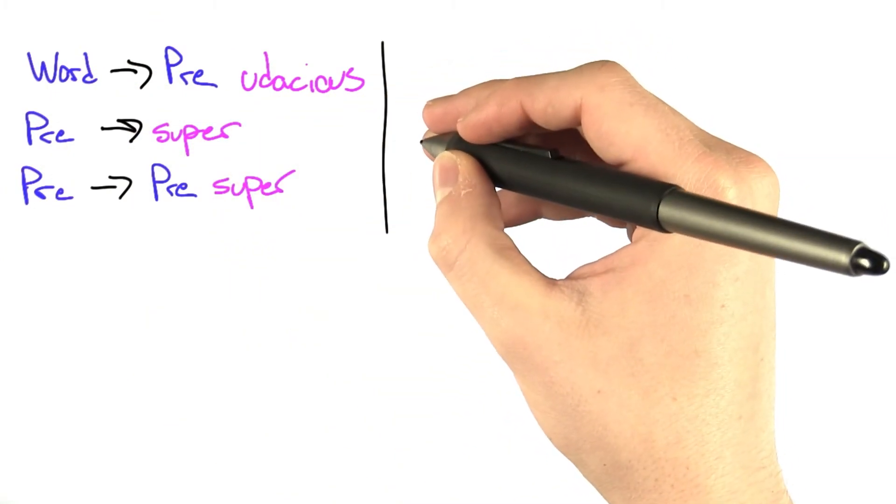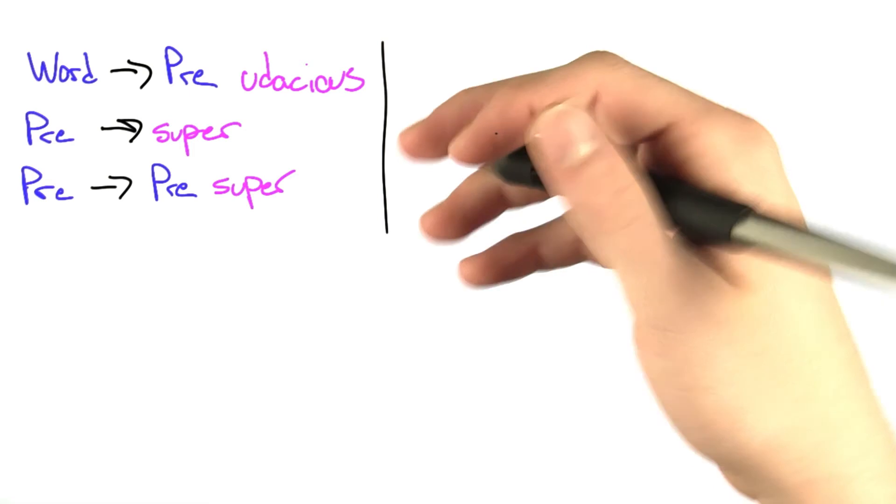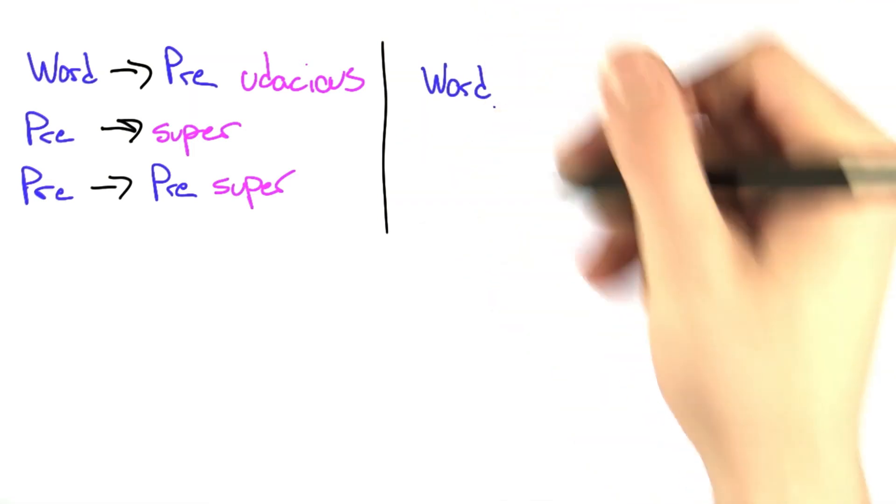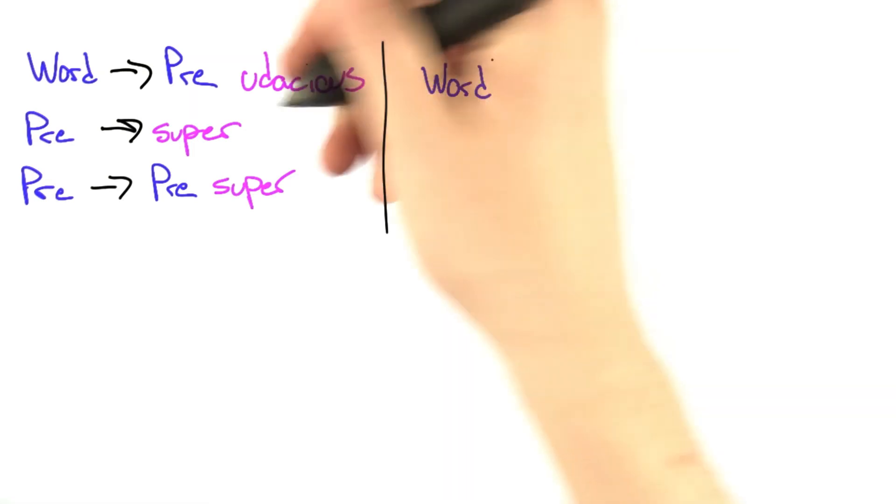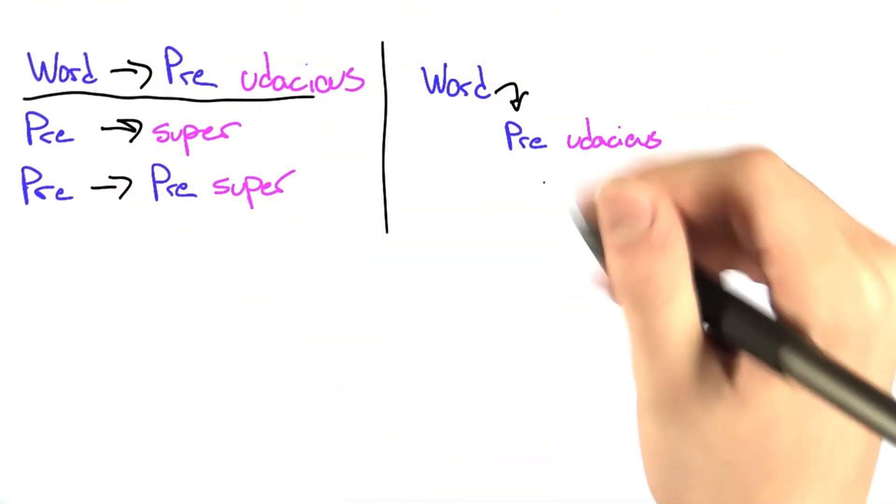So here we have a grammar that looks a lot like our first one. However, let's still work it out to see if there's an infinite number of words. So according to the problem, we start with word, and there's only one substitution rule for word. From pre-Eudacious, we have two options.